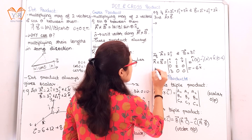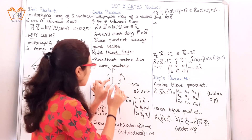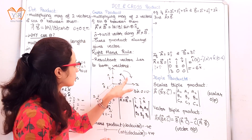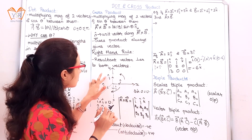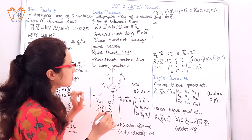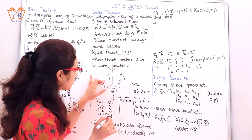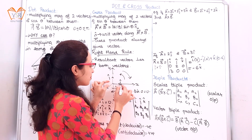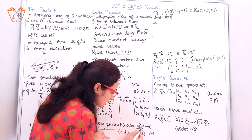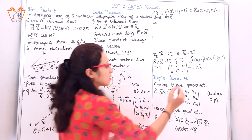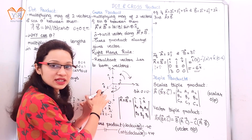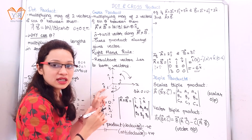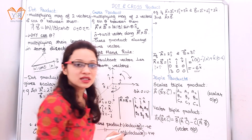Now verify: ĵ × î is a clockwise direction, and for clockwise direction we always get a negative result. We are getting a negative result in the k direction because the two vectors are in the x-y plane and the resultant vector is in the z direction, that is k̂. So the answer is −6k̂, which is confirmed.